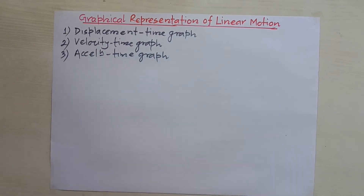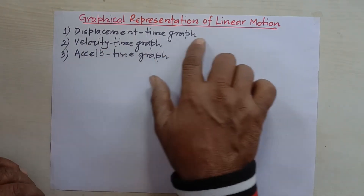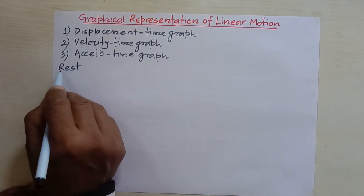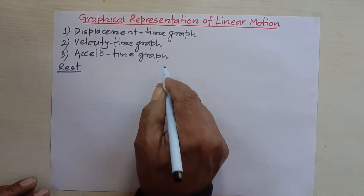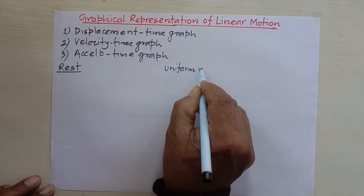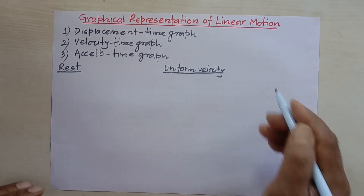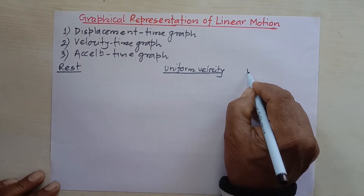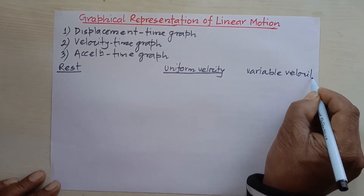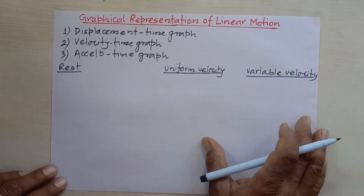With these three methods, the motion of a body — linear motion, which is motion in a straight line — can be represented. Today we are talking about the displacement-time graph. We'll focus on three cases: when a body is at rest, when it has uniform velocity, and when it has variable velocity.